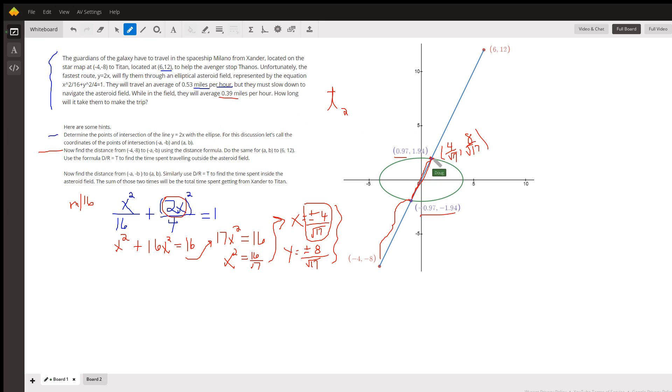And then do the same thing from here to here to get time three. Add time one, time two, time three, and you've got the total time to make the trip. Okay, hopefully that's enough of a clue on what's happening for you to finish the problem on your own. There you go.